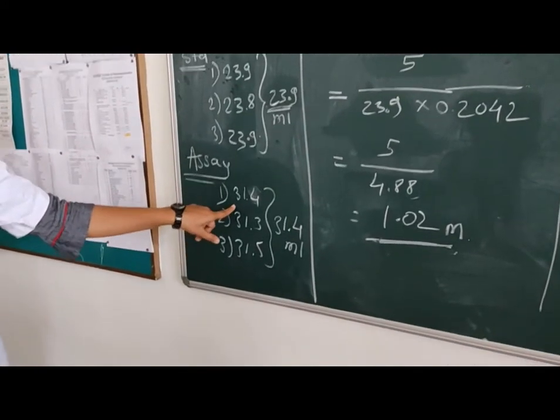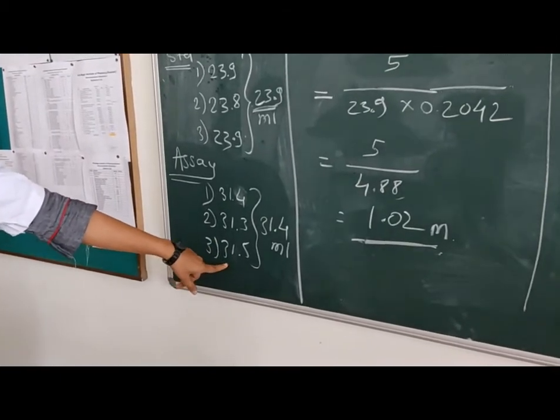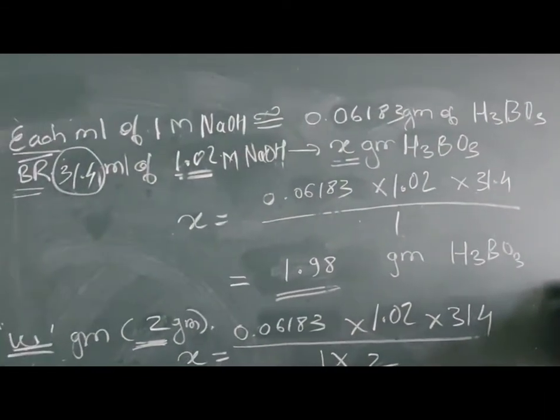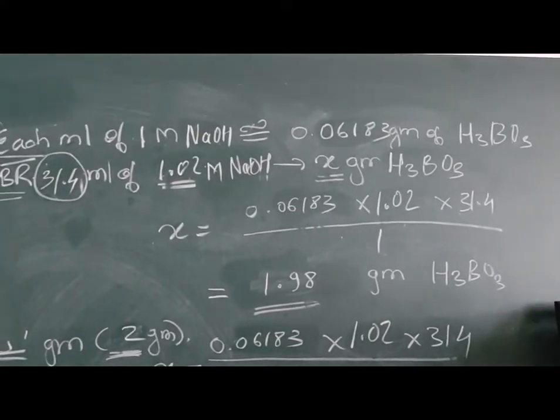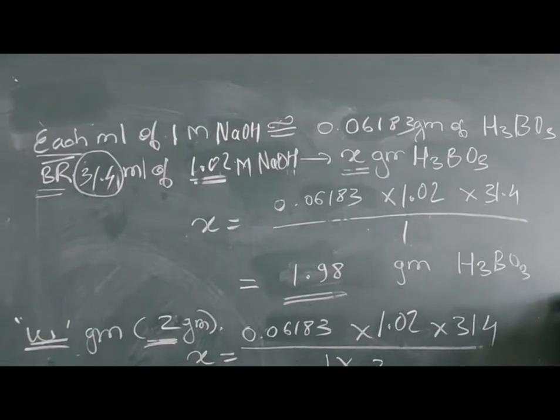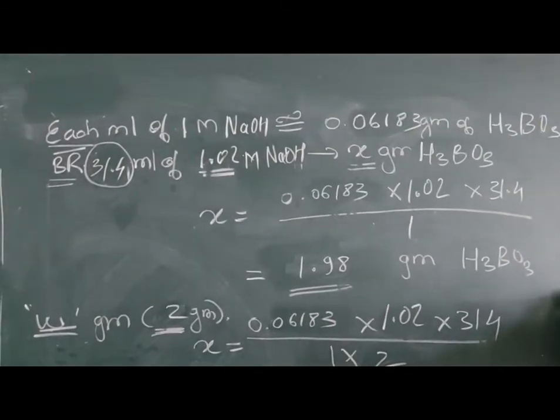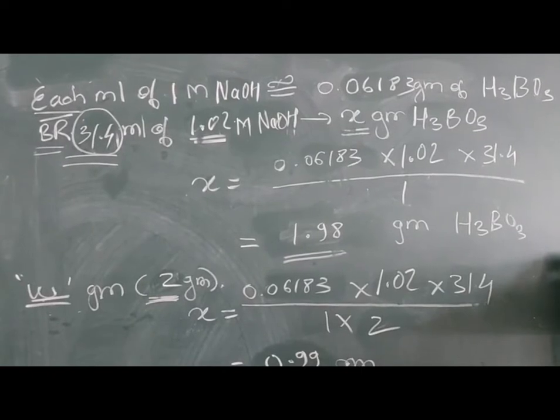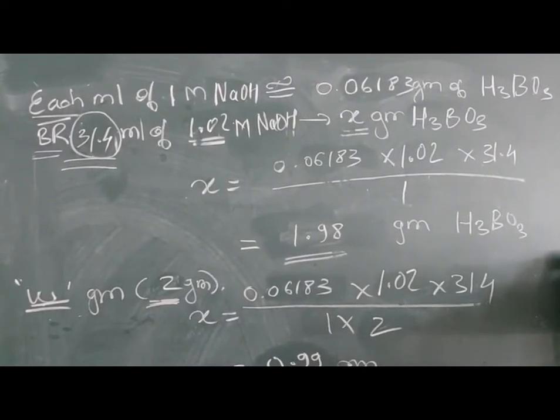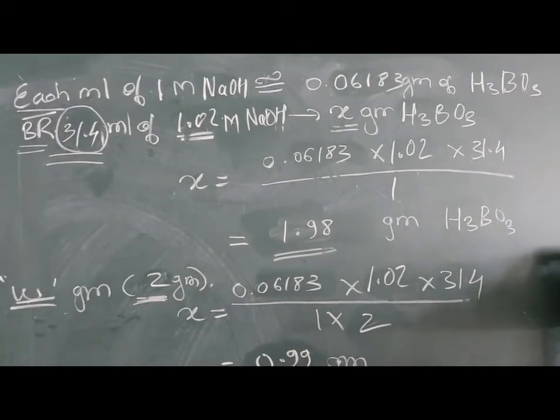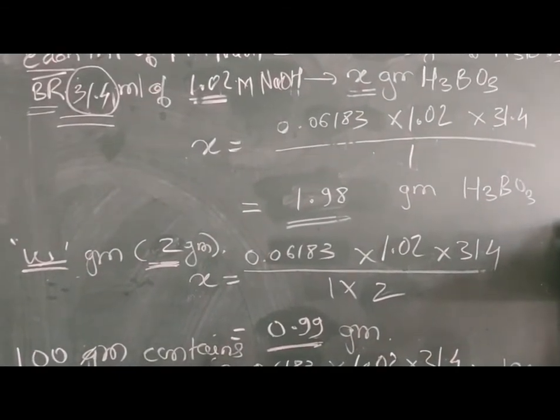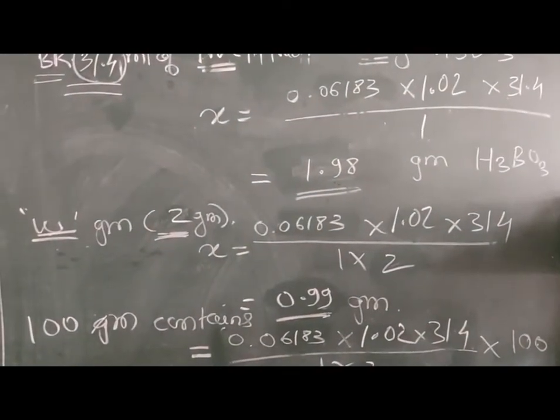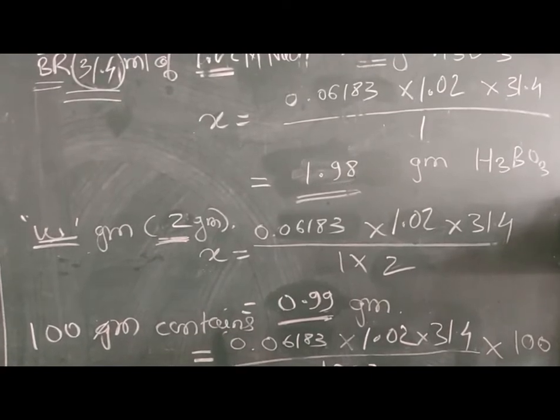The second part is calculation for percent purity. Assay readings are 31.4, 31.3, 31.5 and mean 31.4. Our given factor is each ml of 1 molar sodium hydroxide equivalent to 0.06183 grams of boric acid. That means 31.4 ml of 1.02 molar sodium hydroxide will use how many grams of boric acid. So x equals 0.06183 times calculated molarity times burette reading. Put the value into this formula: 0.06183 times 1.02 times 31.4 divided by 1. The answer is 1.98 grams of boric acid.